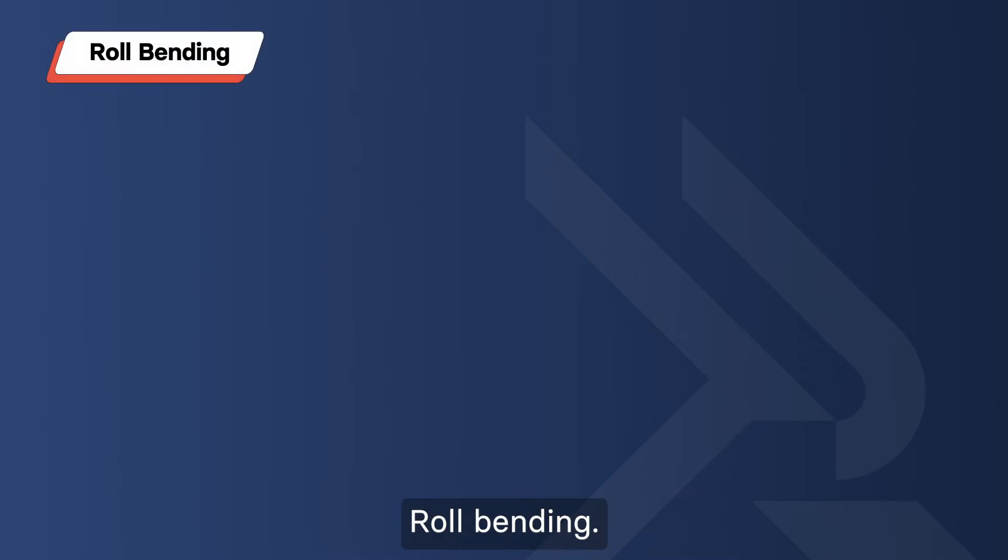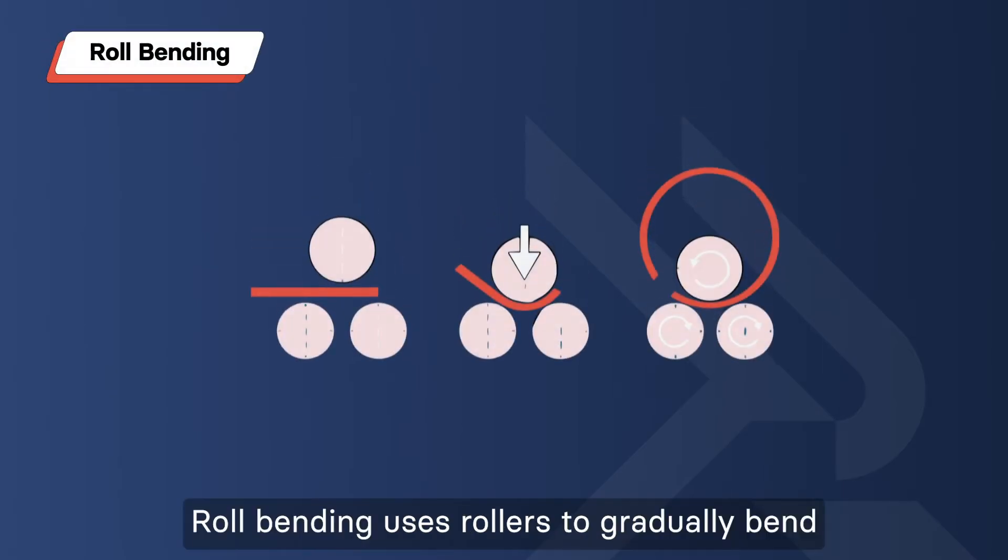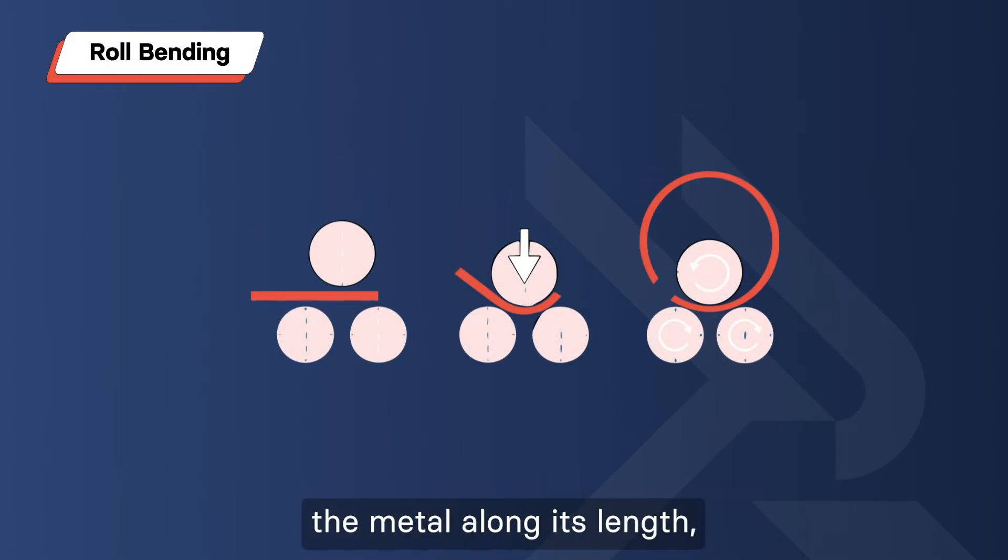Roll-bending uses rollers to gradually bend the metal along its length, creating curves and cylinders.